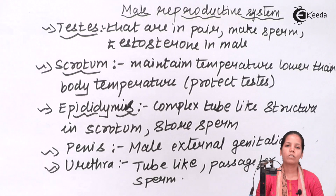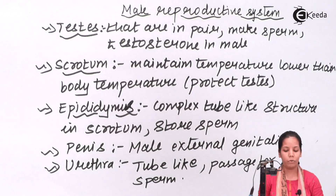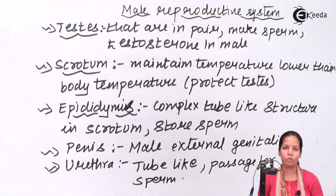The male reproductive system in human beings consists of organs like testes, scrotum, urethra, epididymis, etc.